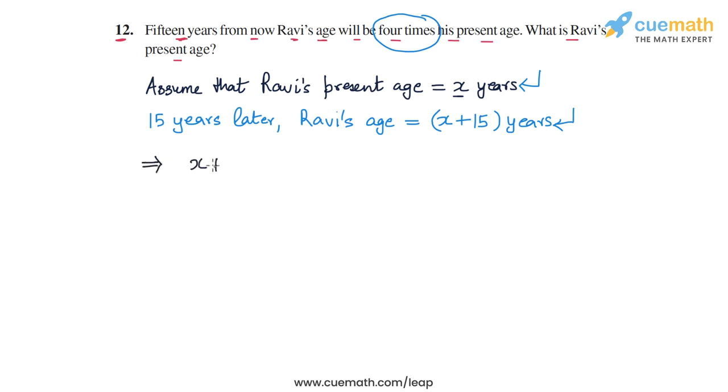15 years later his age is x plus 15, and this will be four times his present age, or 4 into x.